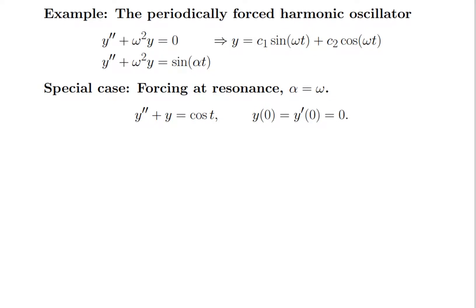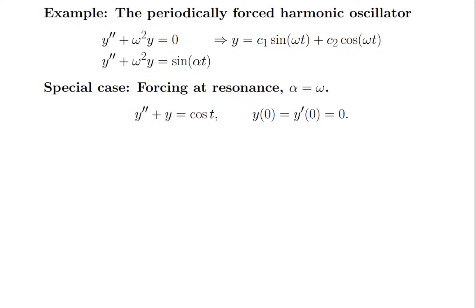Now a different kind of example: the periodically forced harmonic oscillator. This differential equation is extremely important in physics. A simple physical model is a mass on a spring — if y is the displacement from rest, it obeys this equation from Hooke's law and Newton's second law. Solving y'' + ω²y = 0 gives solutions ±iω, so you get sines and cosines: all solutions are periodic with frequency ω — sin(ωt) and cos(ωt).